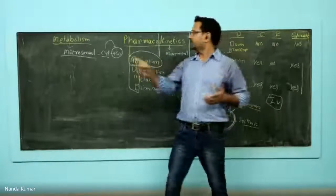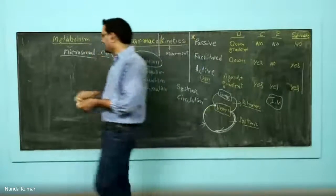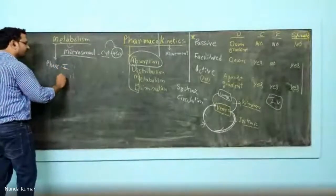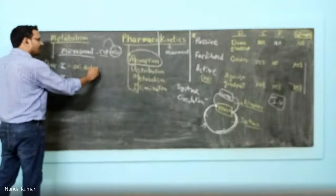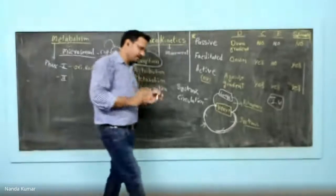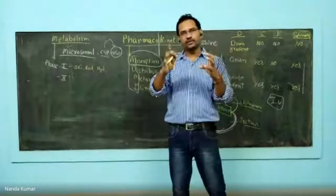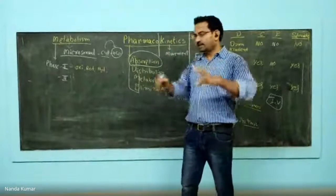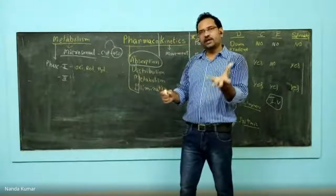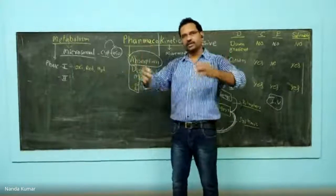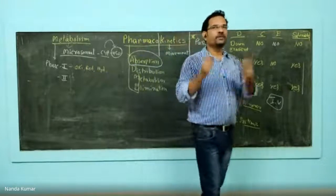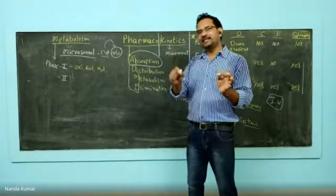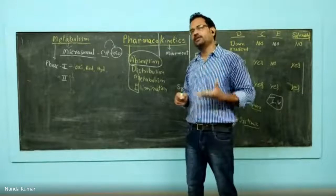Water solubility is achieved through metabolism. In metabolism there are two phases: phase one reactions and phase two reactions. In phase one you have oxidation, reduction, and hydrolysis. Oxidation attaches an -OH group which gives polarity; reduction removes a lipophilic group and exposes a hydrophilic group; hydrolysis by attaching -OH or -H again increases polarity. The basic job of phase one is to increase polarity so the drug can be eliminated through urine.